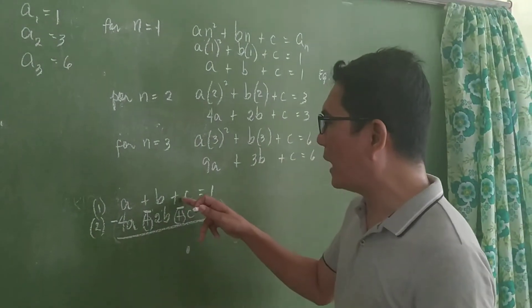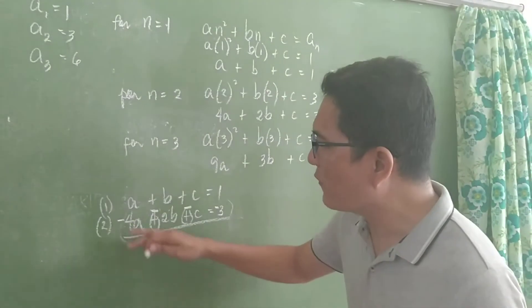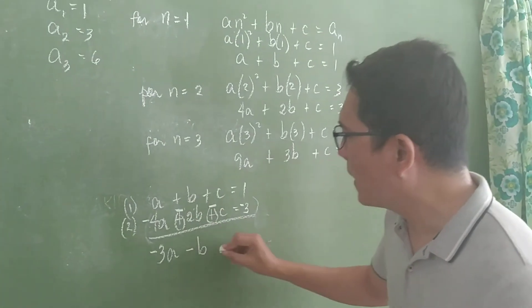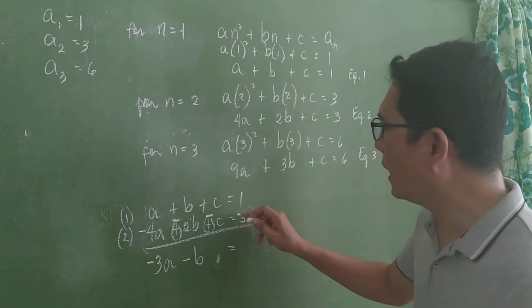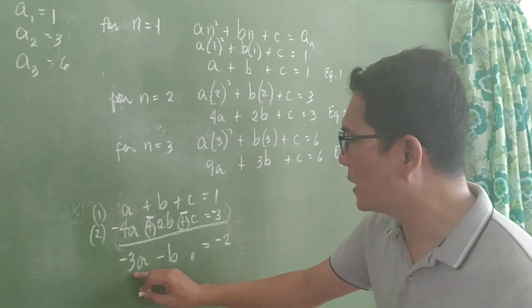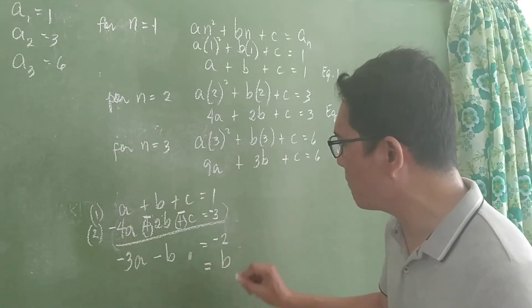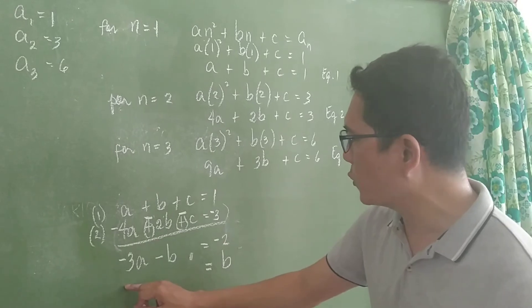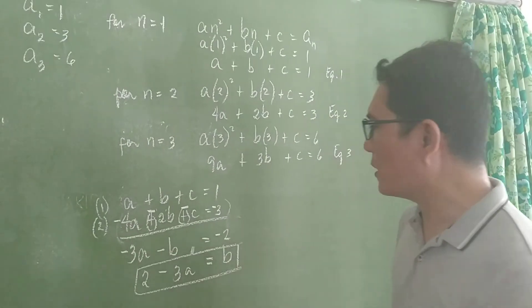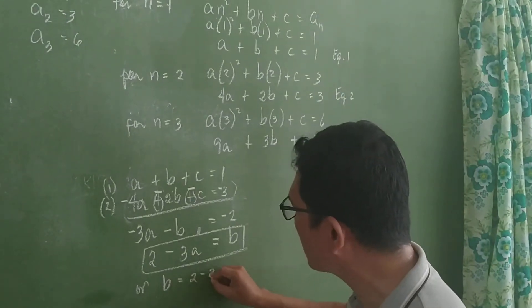Adding the equations: a − 4a = −3a, b − 2b = −b, and 1 + (−3) = −2. So we have −3a − b = −2. Solving for b: transposing gives us b = 2 − 3a.